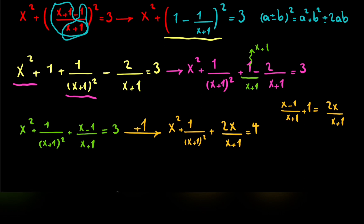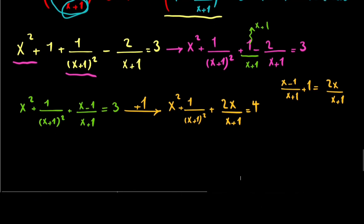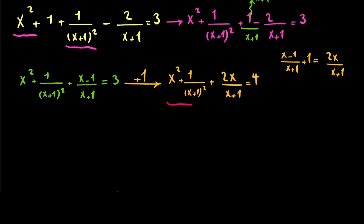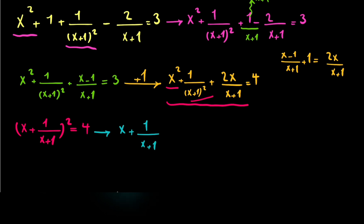If you look at the left side, you can see a perfect square. We can write x plus 1 over x plus 1 squared, because we have x squared here, 1 divided by x plus 1 squared here, plus 2 times x times 1 over x plus 1 — that is, 2x over x plus 1. So the left side equals x plus 1 over x plus 1 squared, which equals 4. Therefore x plus 1 over x plus 1 equals positive or negative 2, giving us two cases.